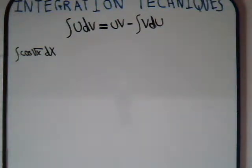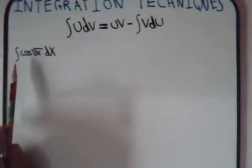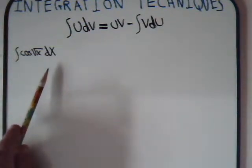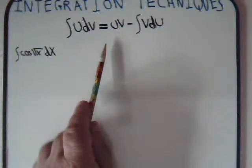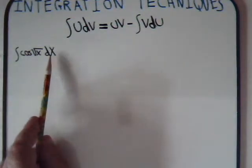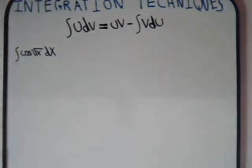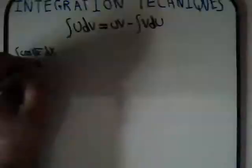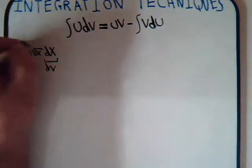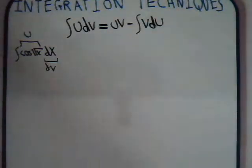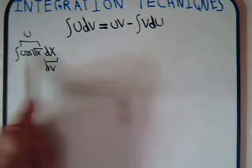In this video we want to attempt to use integration by parts to solve the integral of cosine of the square root of x dx. If this is the way we're going to go with it, then we have no choice. We're going to have to call dx our dv, and this would be u — because we don't know how to integrate the cosine of the square root of x.